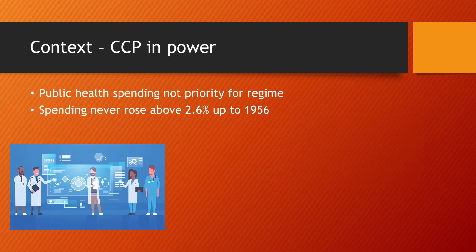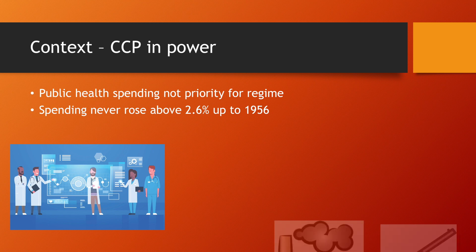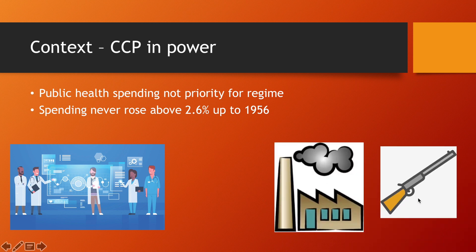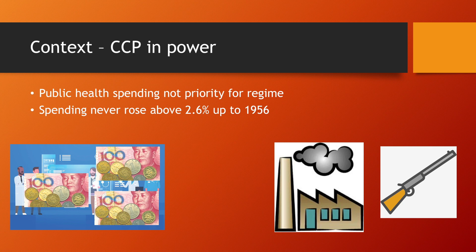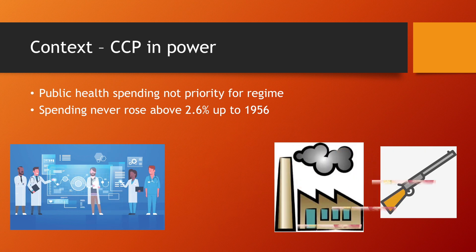With the CCP in power, public health spending was not really a priority for the regime. They were focused on other things, like industry and the military — for example, during the Korean War. That was a big drain on the Chinese economy, so funds were diverted from areas like health care to industry and the military, in order to fund Mao's ambitious plans.